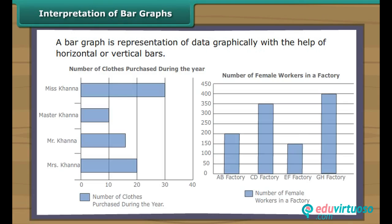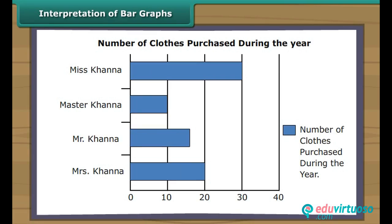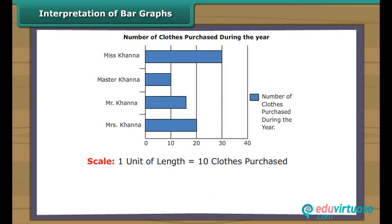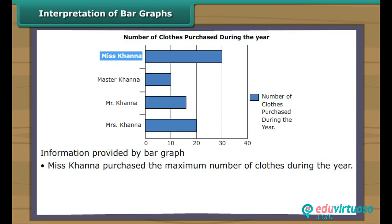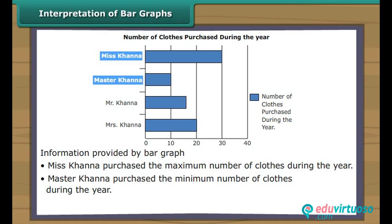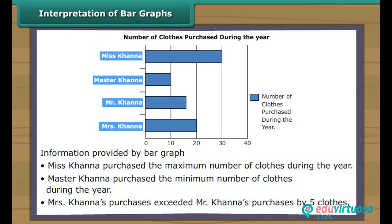A bar graph is a representation of data graphically with the help of horizontal or vertical bars. Bar graphs are easier to draw than pictographs. Look at this horizontal bar graph — the thickness of the bars and the gap between the bars are identical. It shows details of clothes purchased by the members of the Khanna family during the year. One unit of length represents 10 clothes purchased. Miss Khanna purchased the maximum number of clothes; Master Khanna purchased the minimum. Mrs. Khanna's purchases exceeded Mr. Khanna's purchases by 5 clothes.